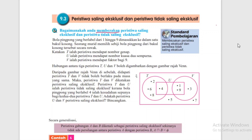Bola pingpong berlabel dari huruf 1 hingga 9 dimasukkan ke dalam bakul kosong. Seorang murid memilih sebiji bola pingpong dari bakul tersebut secara rawak. Dekat sini, katakan T ialah peristiwa mendapat nombor genap - kita ada 2, 4, 6, 8.